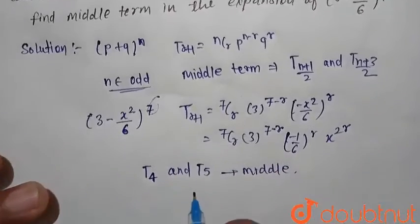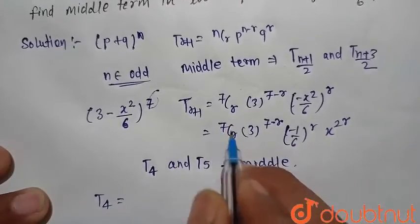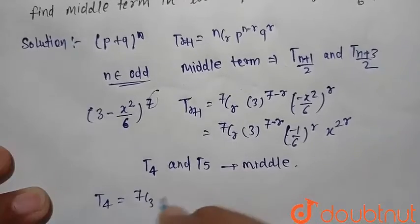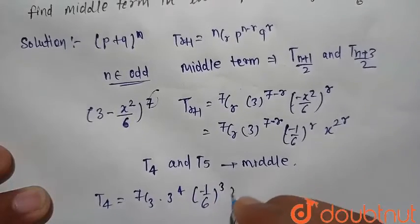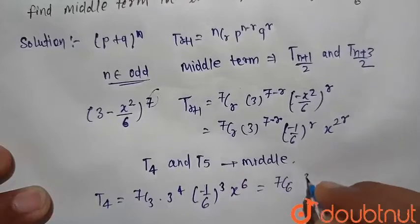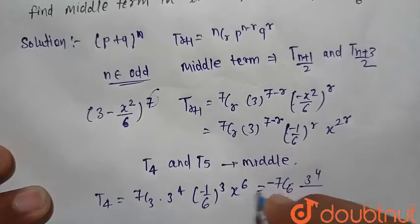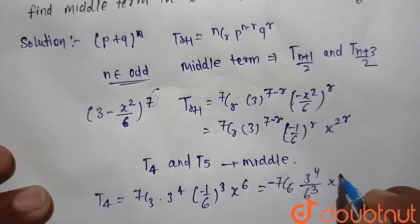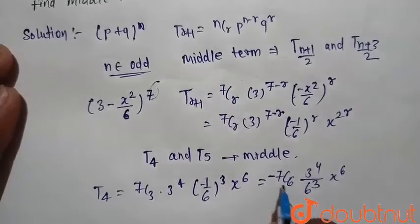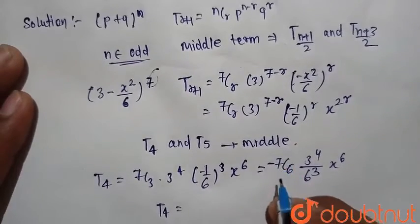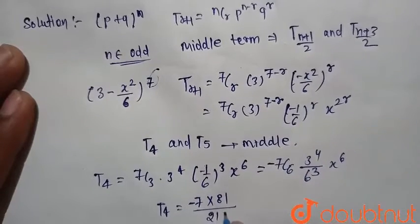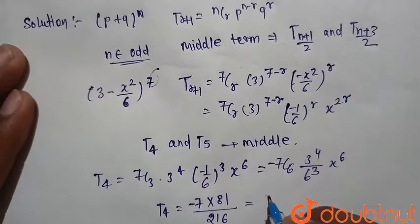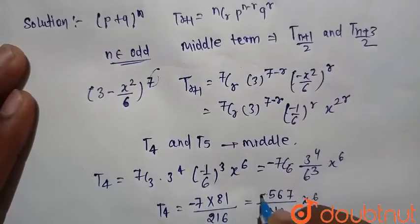Now we find T4 and T5 using the expansion. For T4, r is equal to 3. So T4 equals 7C3 times 3 raised to power 4, times (minus 1 divided by 6) raised to power 3, times x raised to power 6. This equals negative 7C3 times 81 divided by 216, times x raised to power 6. That is negative 35 times 81 divided by 216, times x raised to power 6, which gives minus 567 divided by 216 times x raised to power 6. This is the fourth term.